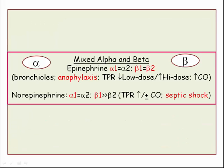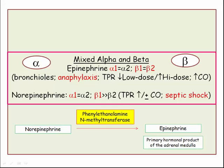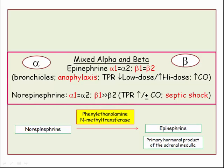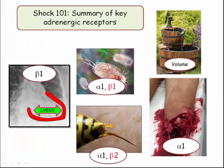Finally, our mixed alpha and beta agents. As previously reviewed, epinephrine is ideally suited for anaphylaxis owing to the beta-2 properties, whereas norepinephrine is reserved for septic shock. Norepinephrine is converted to epinephrine by the enzyme phenylethanolamine N-methyltransferase — it's probably sufficient to remember N-methyltransferase. This reaction takes place primarily in the adrenal medulla, and epinephrine is the primary hormonal product of the adrenal medulla. The USMLE does seem to favor the N-methyltransferase enzyme. That will conclude our two-part video module on shock states for USMLE Step 1.